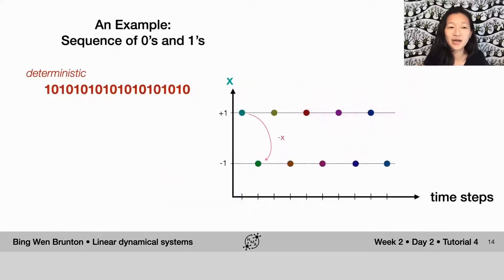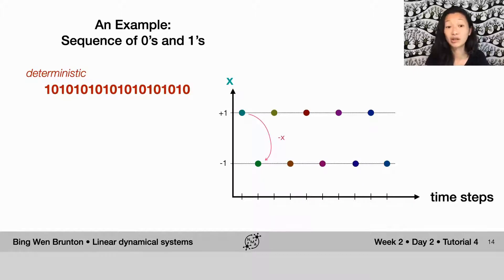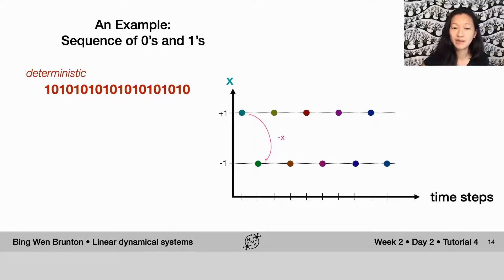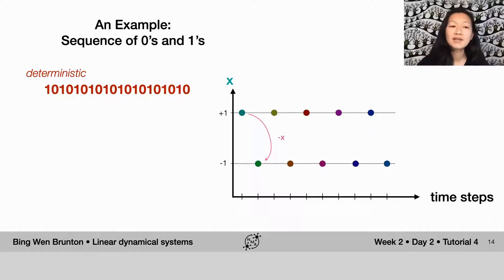We're going to be trying to model sequences of zeros and ones. To start with, let's start with this really simple deterministic sequence of zeros and ones where it's just strictly alternating — it goes 0, 1, 0, 1, 0, 1, 0, 1. I'm going to code it up in a particular way to make the math a little bit easier, where I map ones onto positive one and zeros onto negative one. What you'll see is that to get from each number to the next, all you have to do is multiply it by negative one.